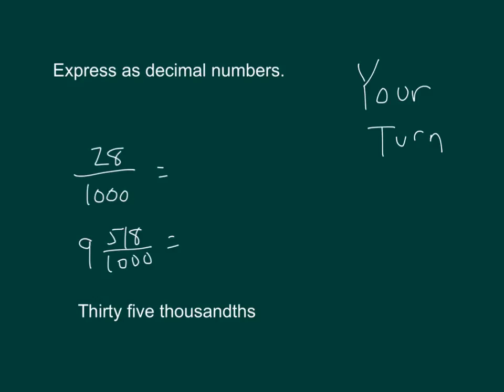Hopefully you put them in the right place. We have 28 thousandths to start with. Next we have 9 and 518 thousandths, which we would write as a decimal that way.